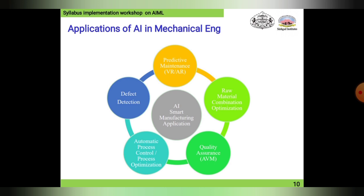Now, how this works: going from left in an anti-clockwise direction, the first one is defect detection, which is correlated with automatic process control or process optimization. Next is quality assurance, which is AVM, and AVM is connected to raw material combination optimization, and that raw material combination optimization is connected to predictive maintenance, which is VR/AR.